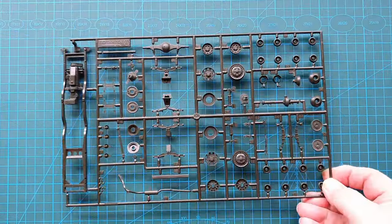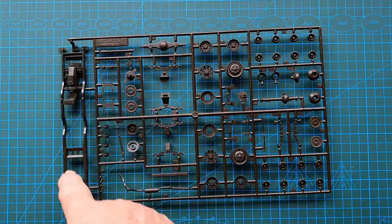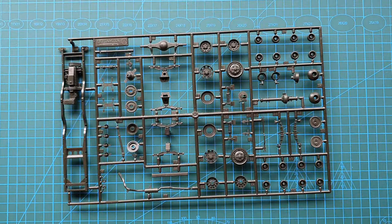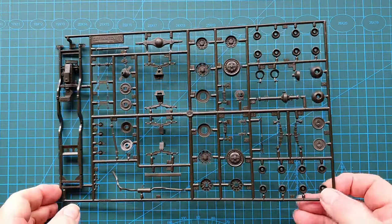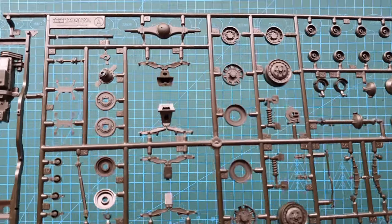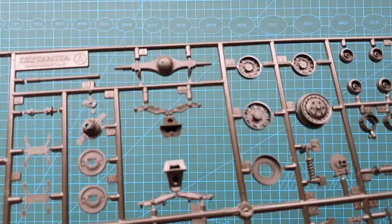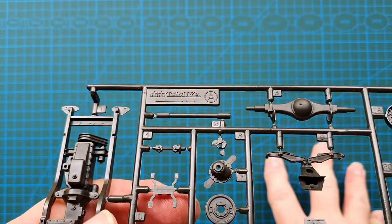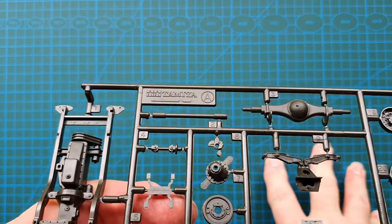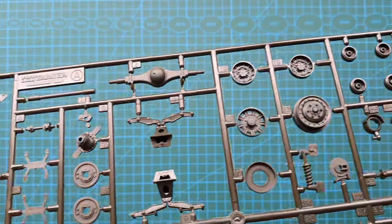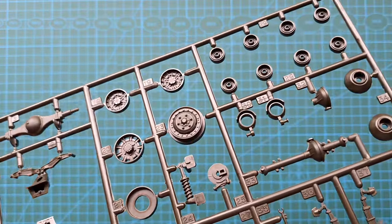And the last sprue is this one, which is your chassis and all your running gear and your main wheels. Let me see if I can get the copyright - Tamiya has blanked the copyright off on this one.